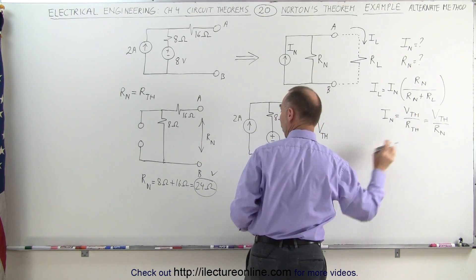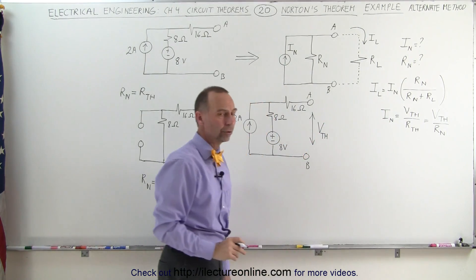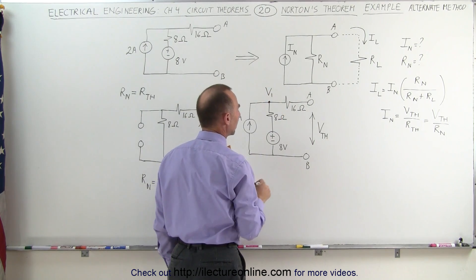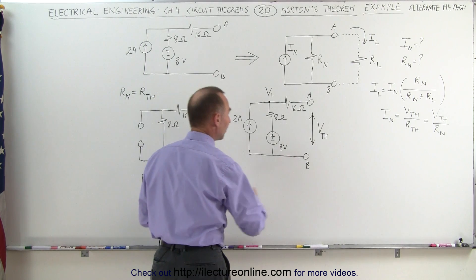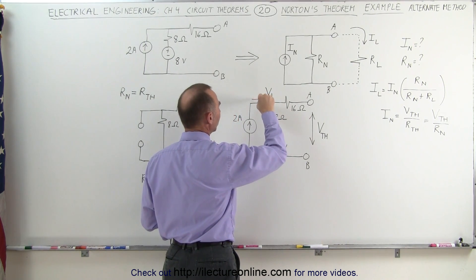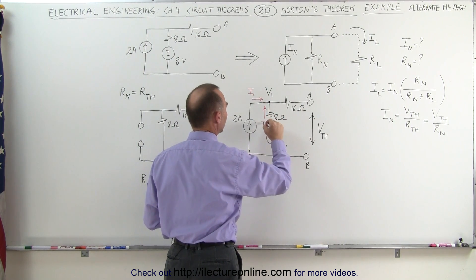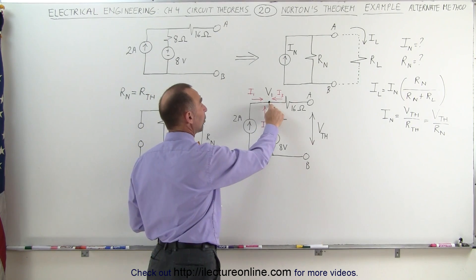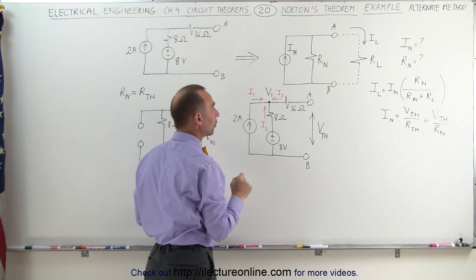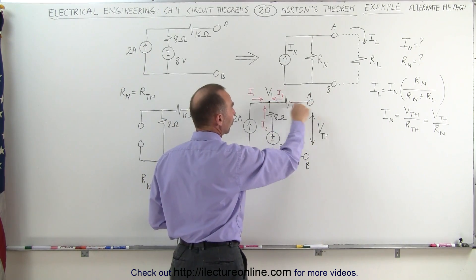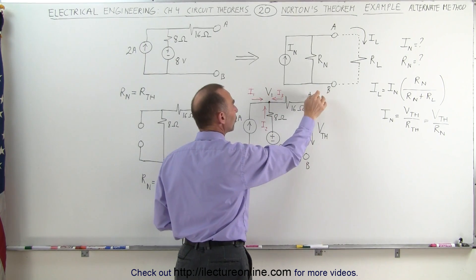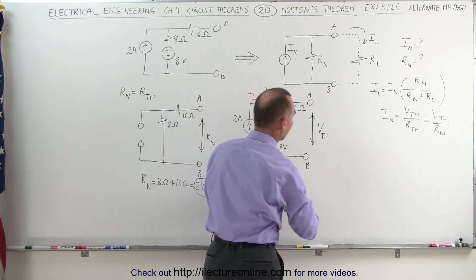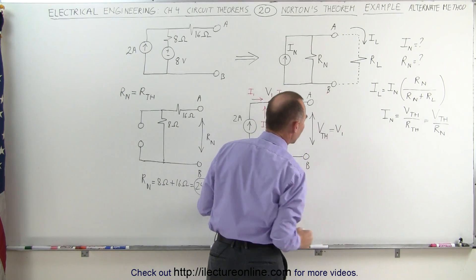Once we find that, we plug it in, and since we already found the Thevenin resistance, we can then find the Norton current. If we take this node right here and call it V1, there is a branch point with three branches entering. Since this circuit is open here, there will be no current flowing through the 16 ohm resistor, so whatever voltage we have at V1 will be the voltage across terminals A and B, assuming the reference voltage is zero at the bottom. This means V1 equals the Thevenin voltage in this example.